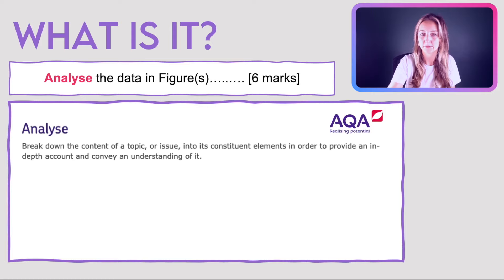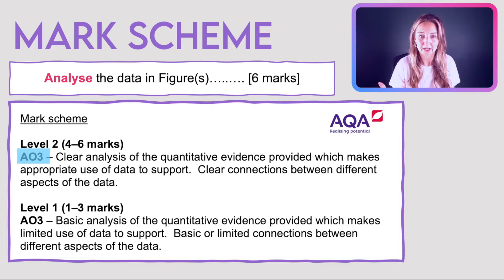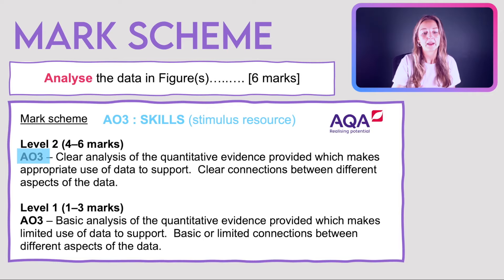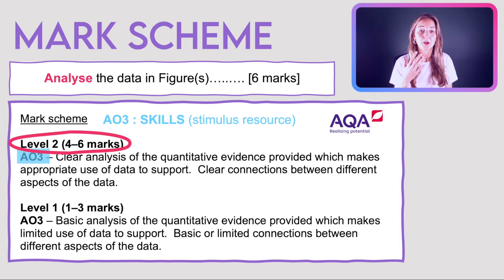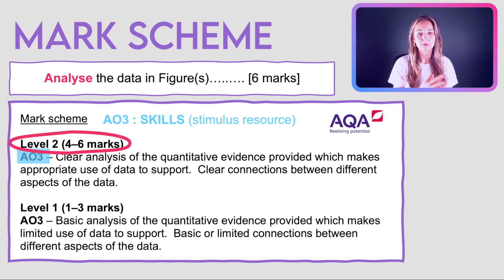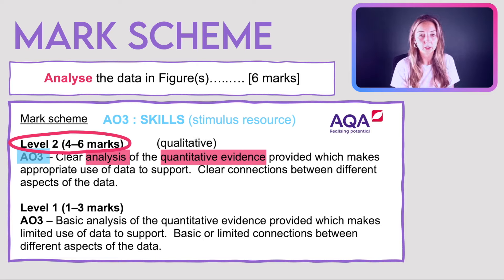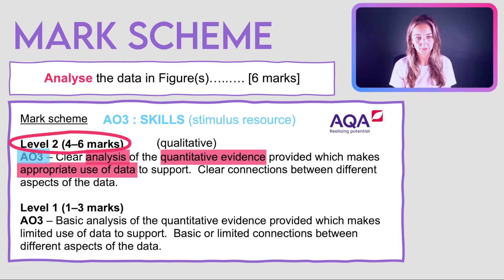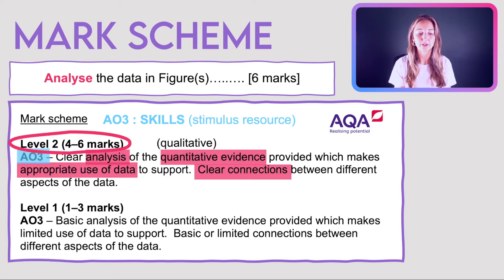Looking at the mark scheme, it's clearly AO3 — skills-based, stimulus-resource focused. This question is level-marked, meaning you get either a clear or a basic answer. To achieve four to six marks you need clear analysis of the quantitative evidence provided — or qualitative, for example in the changing places topic — with appropriate use of data to support, which means not just lifting the data but doing some sort of data manipulation, and clear connections between different aspects of the data.